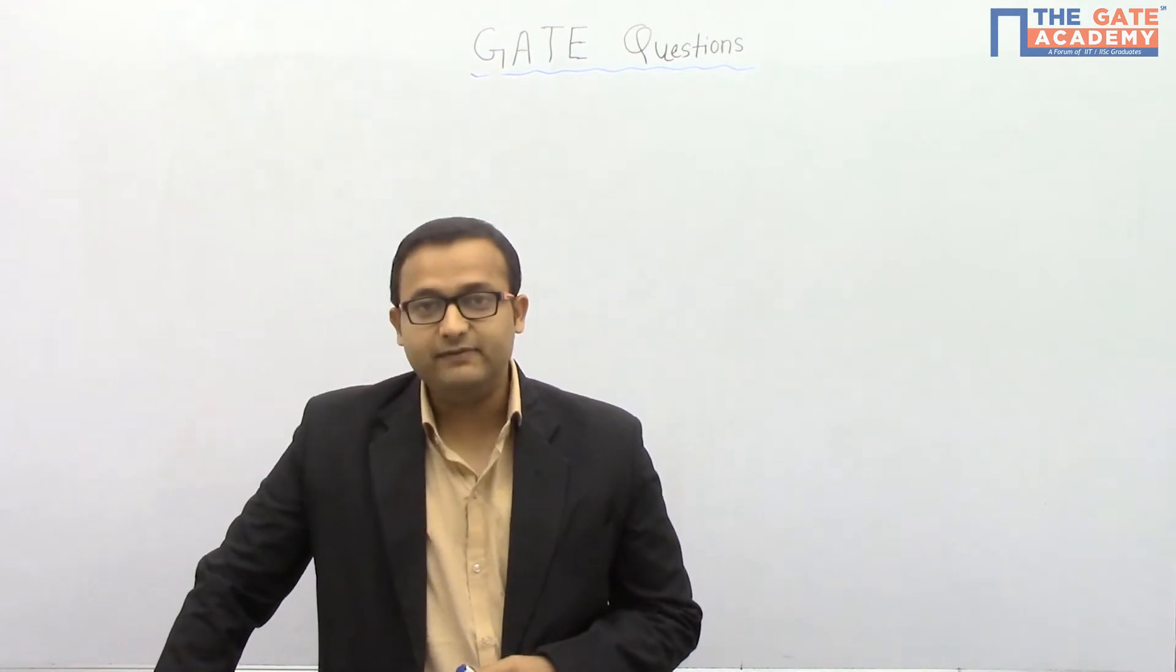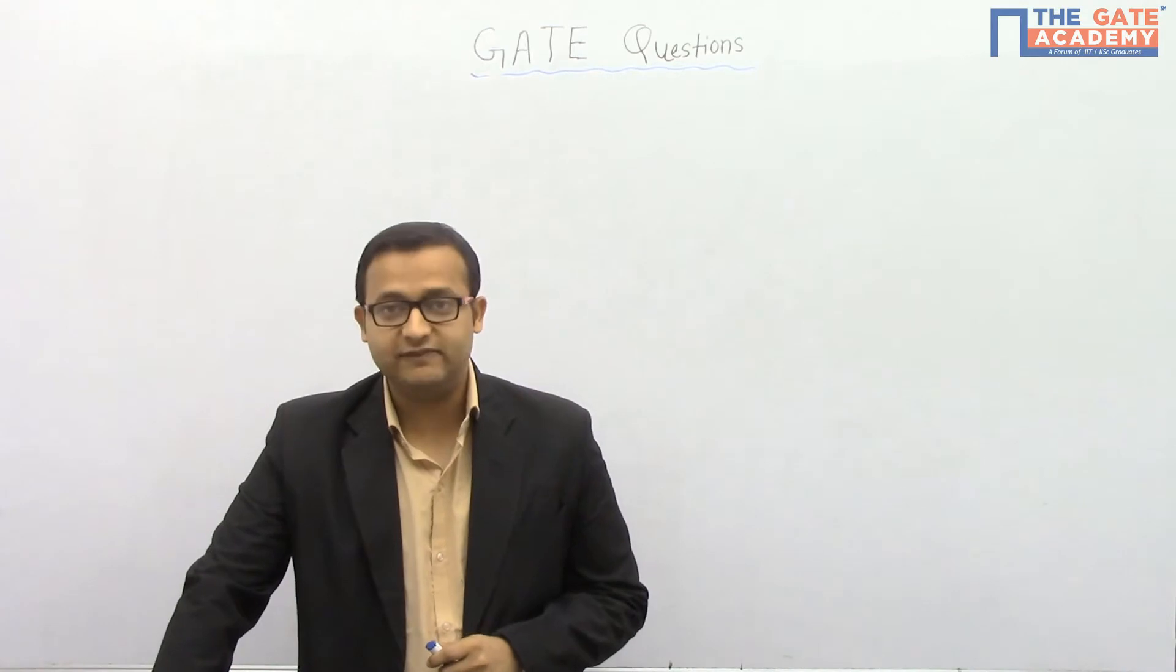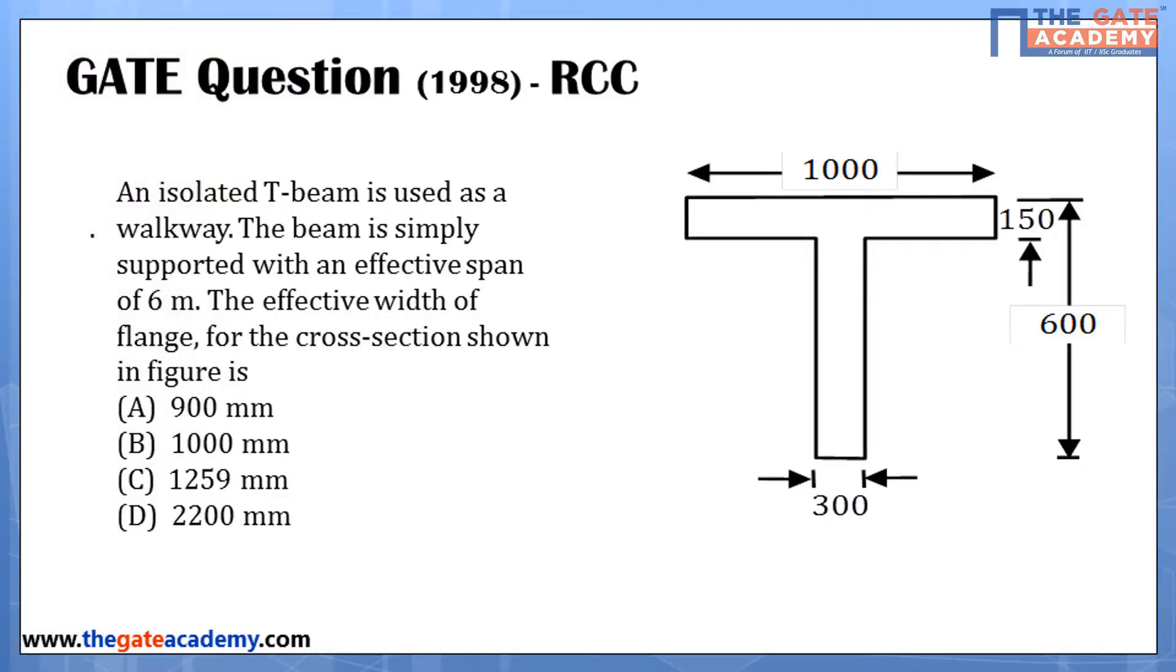Today we will see one problem from GATE, asked in the year 1998 in civil engineering. The problem is: an isolated T beam is used as a walkway, the beam is simply supported with an effective span of 6 meters. The effective width of the flange for the cross section shown in the figure is...